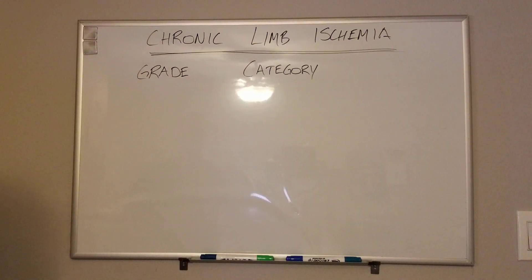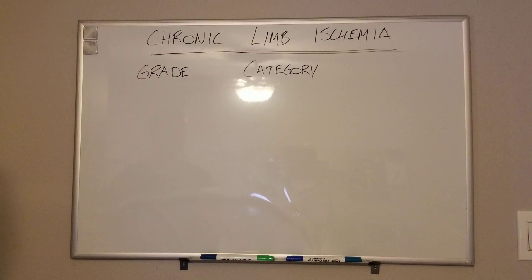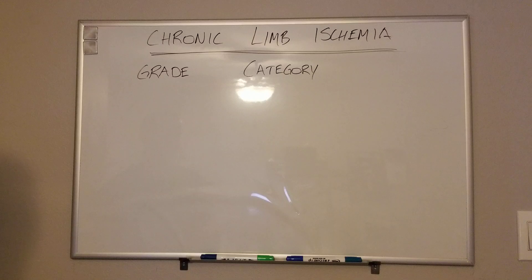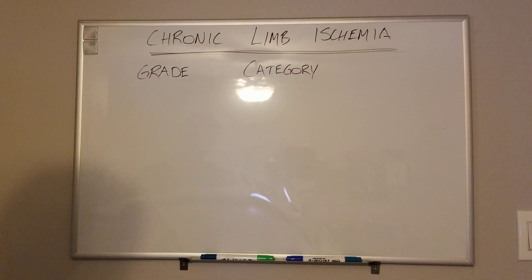Hey guys, MedSchoolMadeEasy. Today we'll be talking about Rutherford's classification of chronic limb ischemia. We won't touch on the Fontaine or other classification systems. We're going to follow the gold standard, which is Rutherford's. We're going to talk about the differences in terms of grading versus categorizing this ischemia, what that means, and what the different subgroup symptoms would be like.